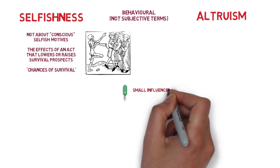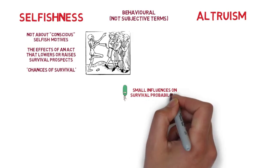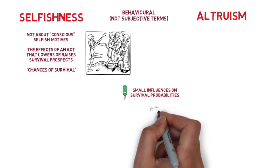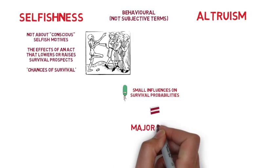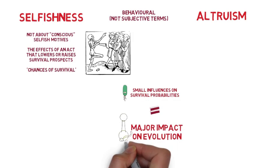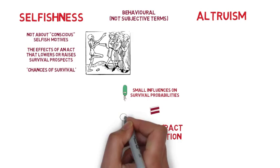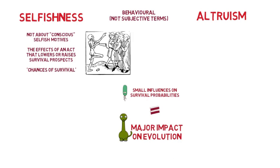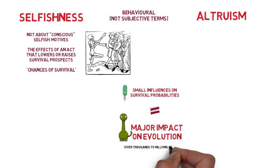Even small and trivial influences on survival probabilities can have a major impact on evolution given the enormous length of time involved — for example, thousands to millions of years.